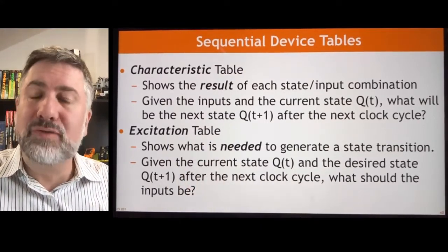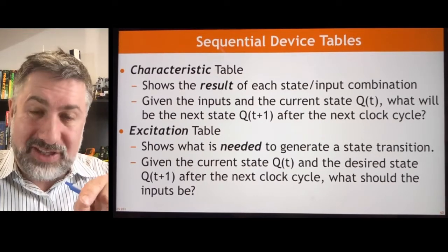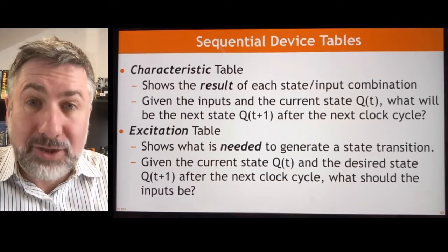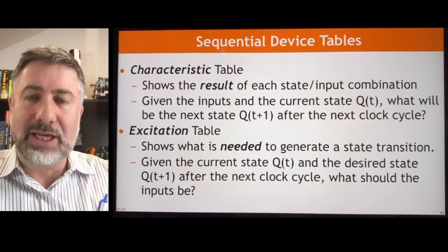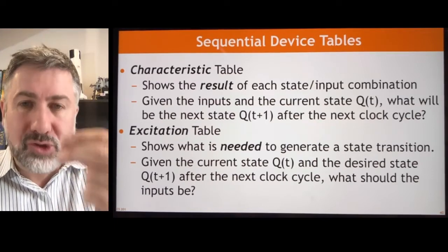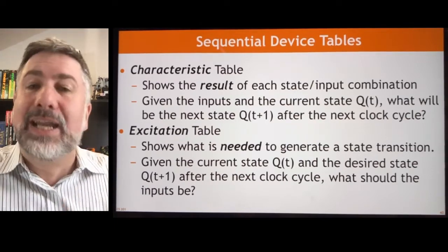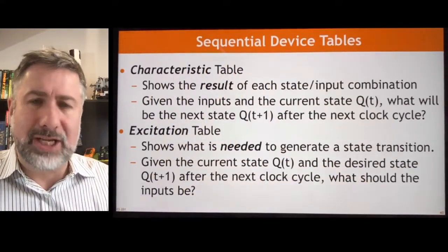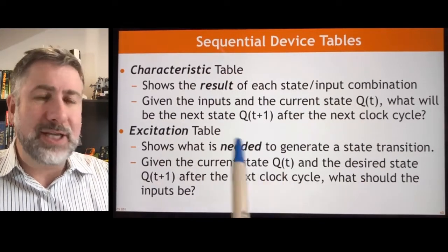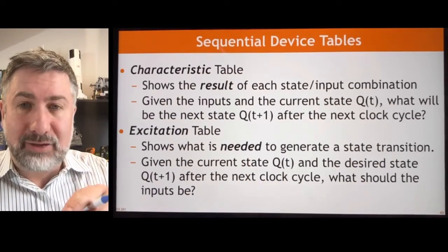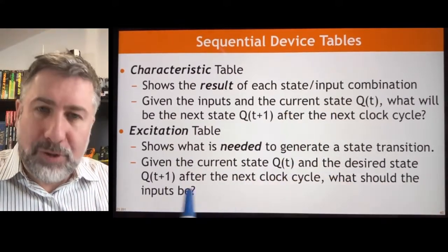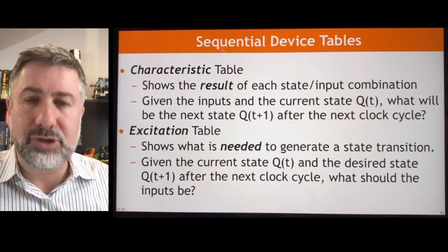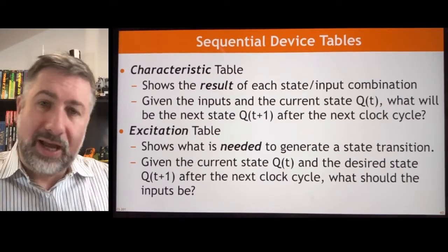The excitation table is sort of the opposite. It says: if I want this device to store a particular value, what do I as the designer have to provide as inputs so that when the next clock cycle happens, I know it will store the value I want? We're exciting the device — storing a value we want to see stored. The characteristic table says what happens to the device in any situation; the excitation table says how do I make the device do what I want. We'll use both when designing circuits.